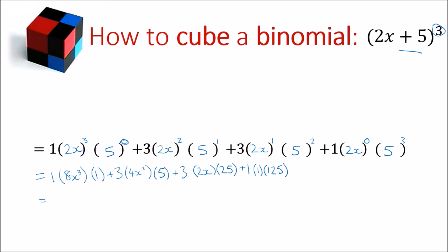Now multiplying out: 1 × 8x³ × 1 = 8x³. Then 3 × 4x² × 5 — doing the numbers first: 3 × 4 = 12, and 12 × 5 = 60, so we get 60x². Next, 3 × 2x × 25: the numbers give 2 × 25 = 50 and 3 × 50 = 150, so 150x. And lastly, 1 × 1 × 125 = 125. So our final expanded cubed binomial is 8x³ + 60x² + 150x + 125.